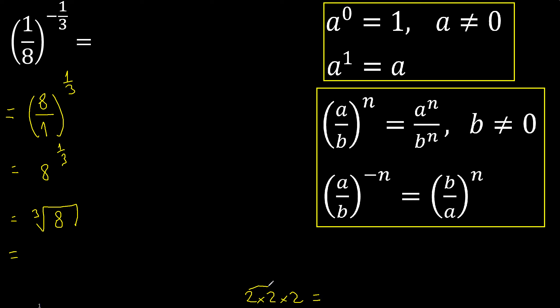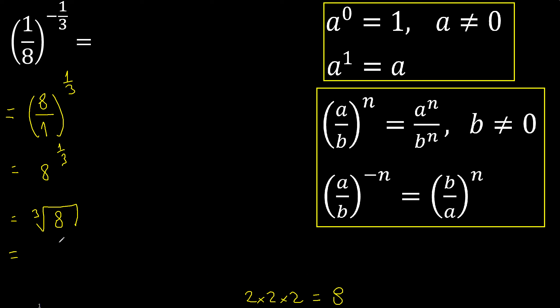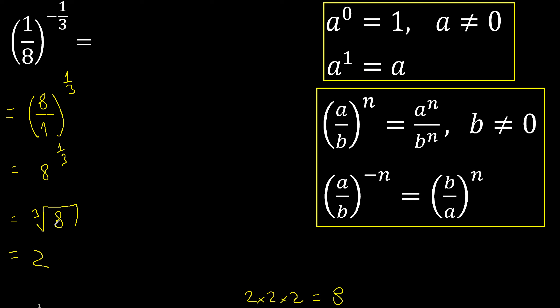2 multiplied by 2 is 4, multiplied by 2 is 8. Therefore equal 2. Finish it.